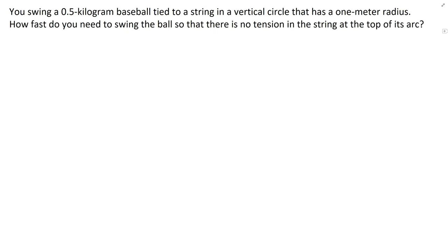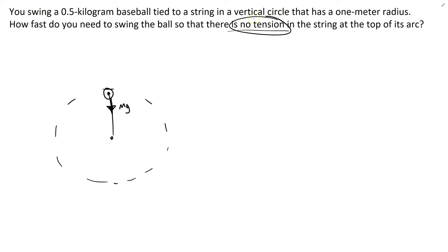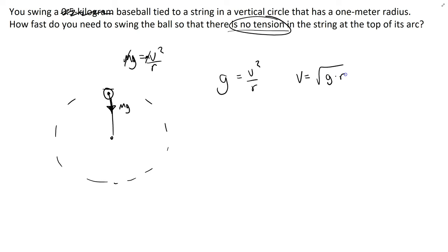Let's do an example. You swing a 0.5 kg baseball tied to a string in a vertical circle with a 1-meter radius. How fast do you need to swing it so there is no tension at the top? Since there's no tension, mg is the only centripetal force: mg = mv²/r. The mass cancels, giving g = v²/r, so v = √(gr).